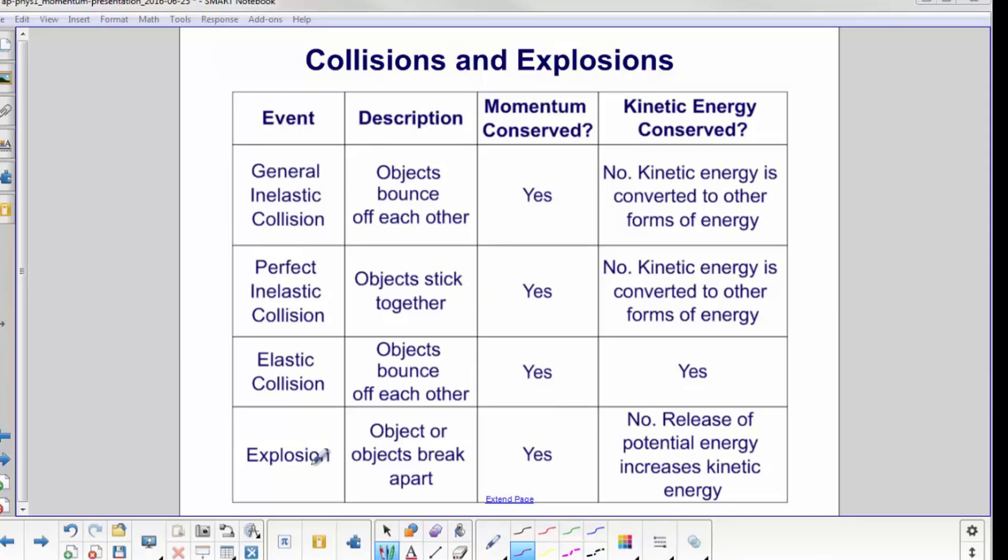So we have the four different collisions: general inelastic, perfect inelastic, elastic and explosion. We talk about what happens in each case. Since we're dealing with an isolated system, momentum is always conserved. That's a pretty easy column. Kinetic energy, for the most part, is not conserved. The only time it is conserved is in an elastic collision. And as mentioned earlier, there's really no such thing as an elastic collision, but we're close enough and the math will work and give us a good prediction of what happens.